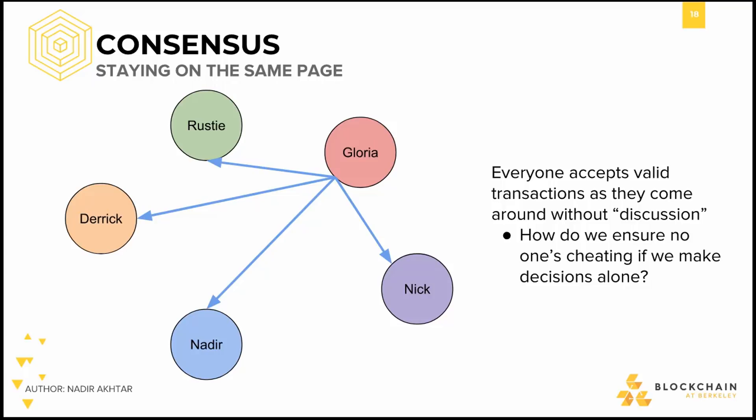For this consensus buildup, we'll consider the same five actors as before: me, Rusty, Gloria, Derek, Nadir, and Nick. In the most basic consensus mechanism, updates take the following form. One node processes a transaction to the network, sending a message about the transaction directly to every other node. All other nodes then save the transaction into their history, if it's valid, and disregard it otherwise.